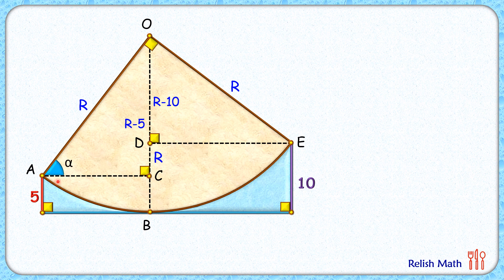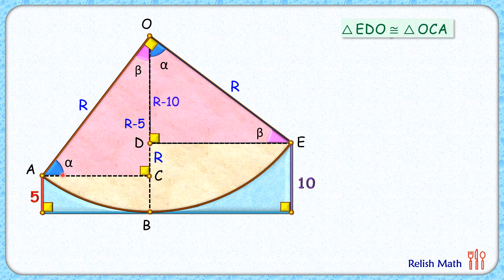Assuming this angle is alpha and this angle is beta, alpha and beta are complementary angles. The remaining angle here is also alpha and the other is beta. In right triangle EDO we have angles alpha and beta with side r, and similarly in triangle OCA we have angles alpha and beta. By the angle-side-angle theorem, both triangles are congruent. Therefore corresponding sides are equal, so ED equals OC, which is r minus 5.